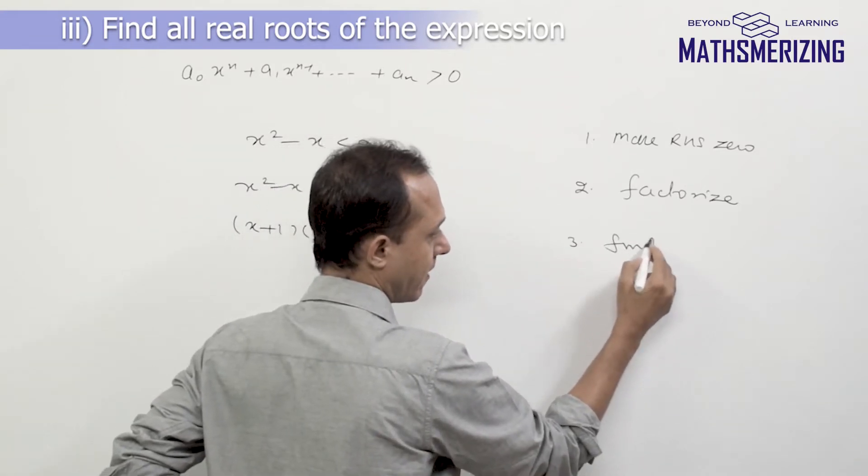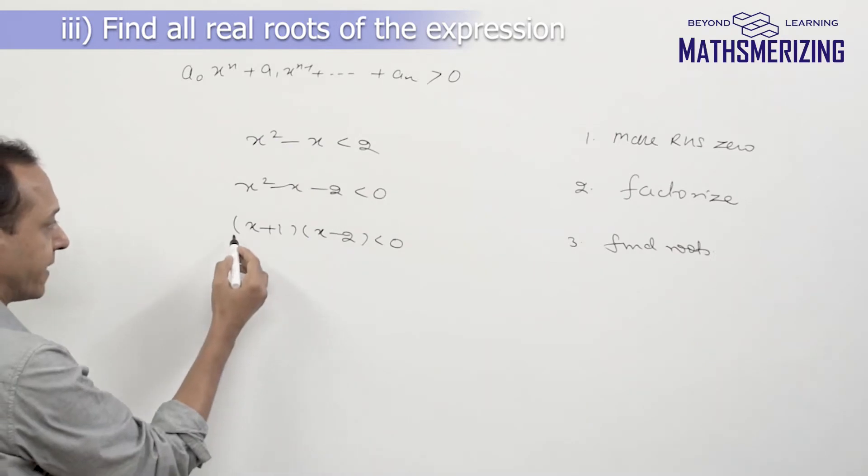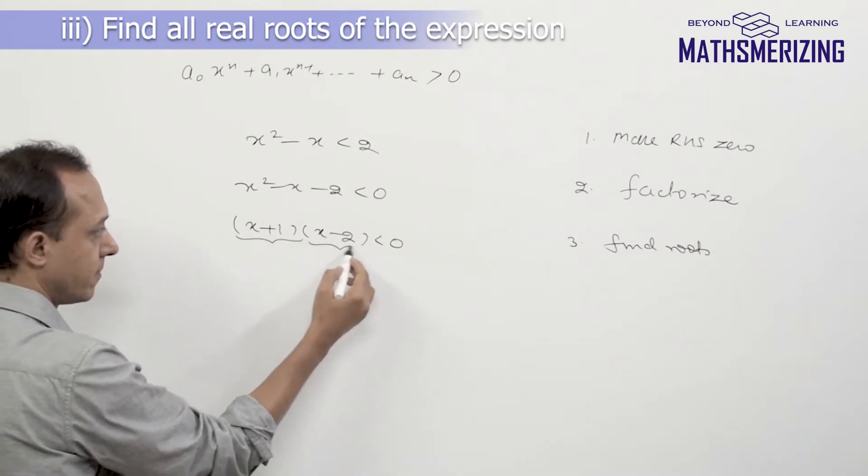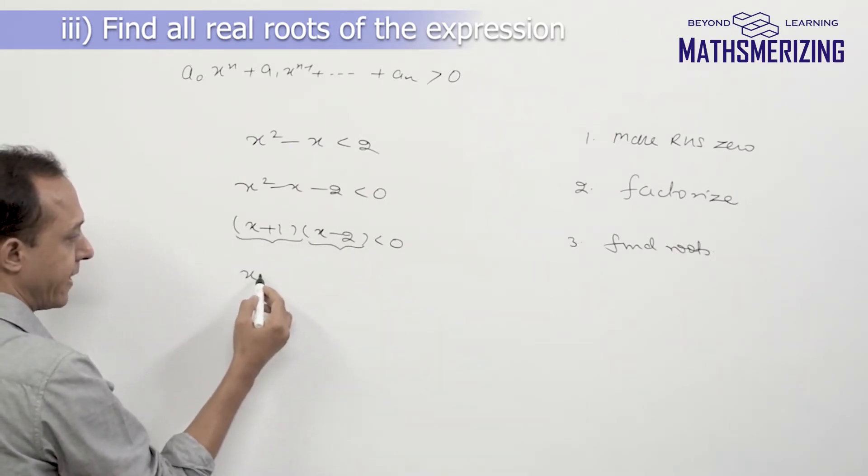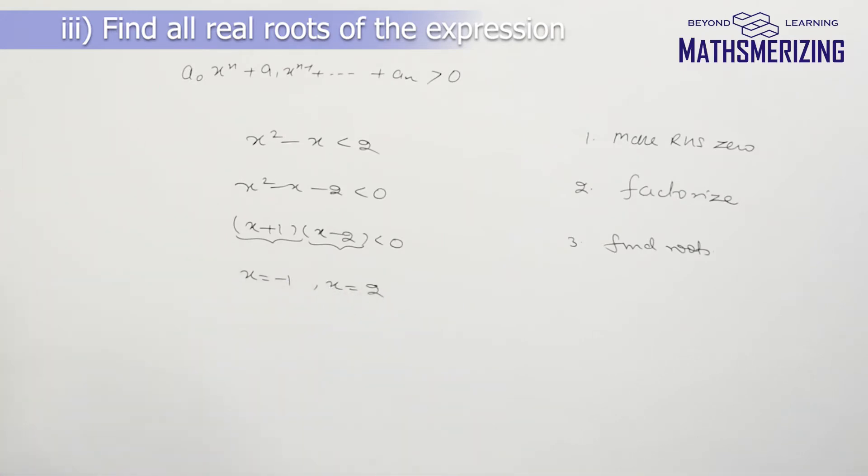Now the third step is find roots. So simply take these factors, put them equal to 0 and find roots. So I'll get x = -1 and I'll get x = 2. So I get two roots.